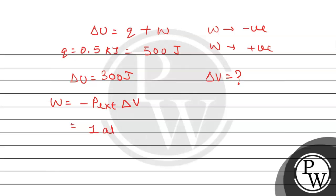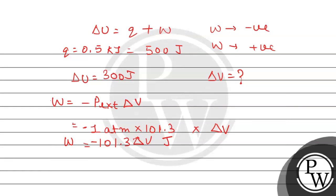P external is given in the statement, that is 1 atmosphere. Now, 1 atmosphere, if we have to convert it into joule, then it will be multiplied by 101.33. And multiplied by delta V. Here we have negative sign. So, work done is negative 101.33 delta V. And now this work done is in joule.